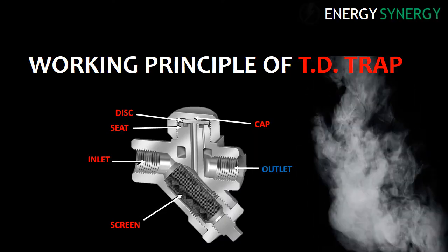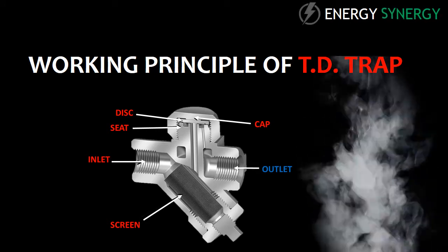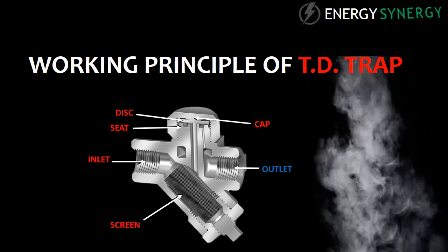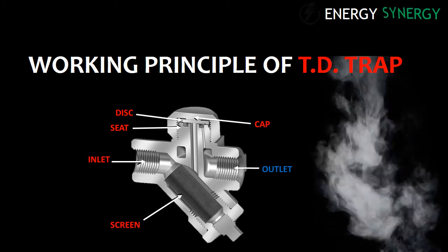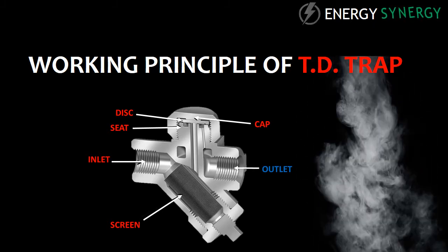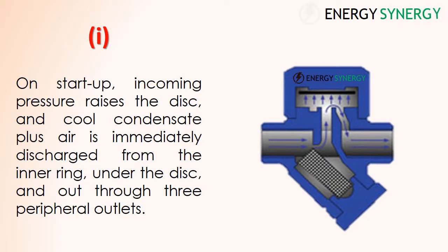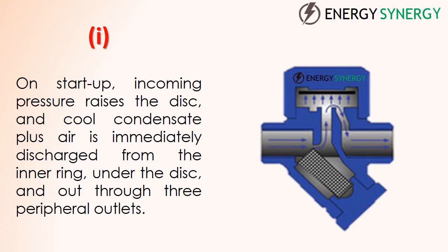A cap is situated on top of the trap which consists of a disc and a seat inside it. TD traps work in four stages, each explained with an animated steam trap. Stage one: on startup, incoming condensate pressure raises the disc, and cold condensate plus air is immediately discharged from the inner ring under the disc and out through three peripheral outlets.